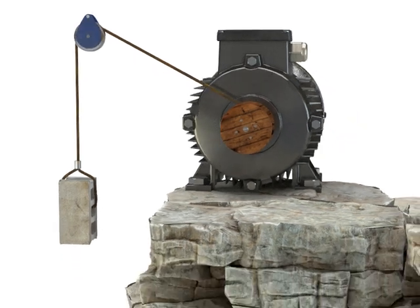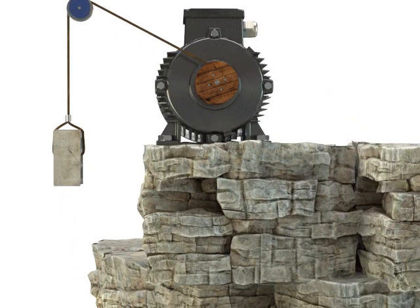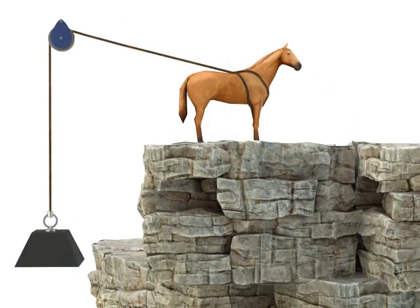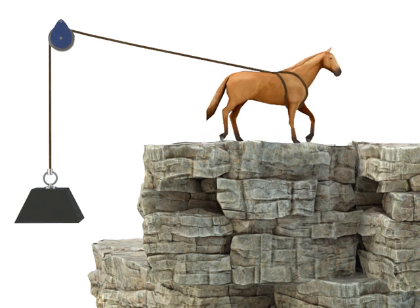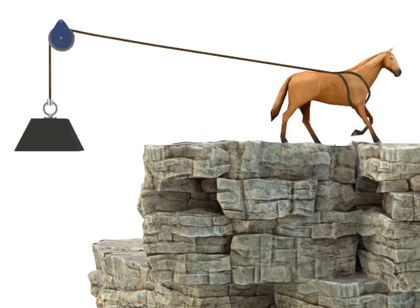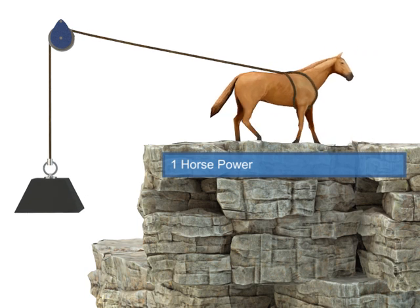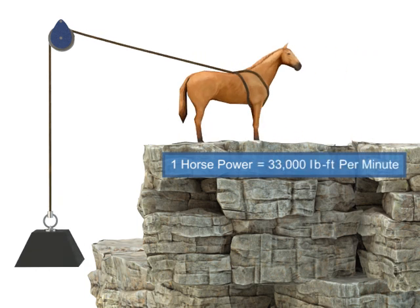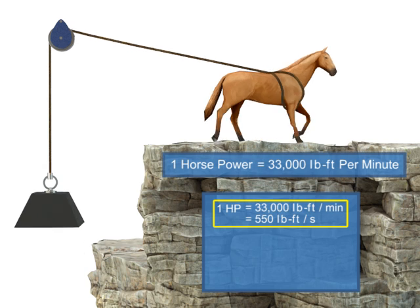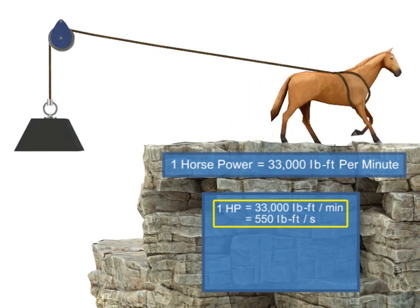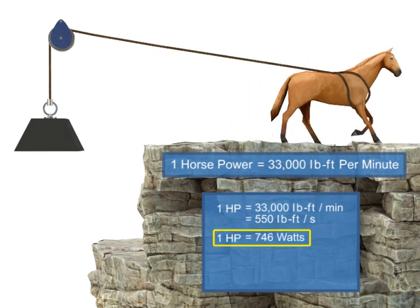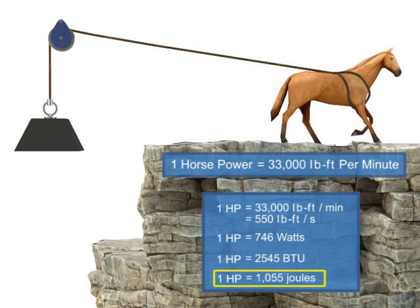Horsepower is defined as the rate at which work is accomplished. Years ago, before motors were invented, most work was accomplished manually. It was estimated that one horse could accomplish approximately 33,000 pound-foot of work per minute, and thus the term horsepower was born. In modern terms, horsepower is simply another unit of measurement for power and can be translated into watts, BTUs, joules, or any unit of power. Units that measure motor power are typically in horsepower or watts.